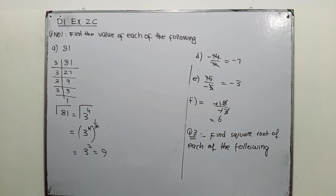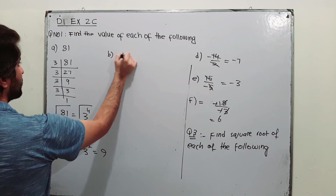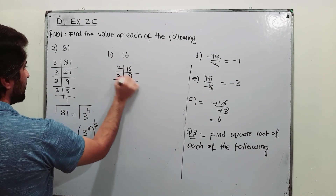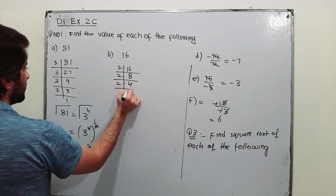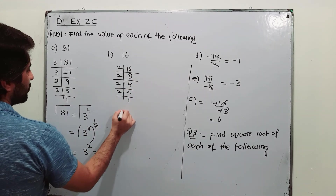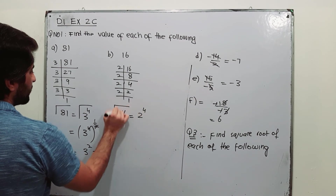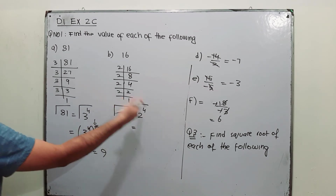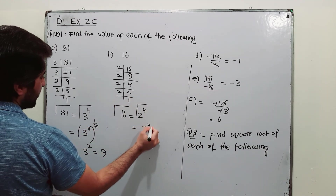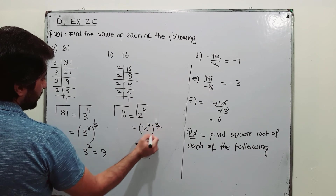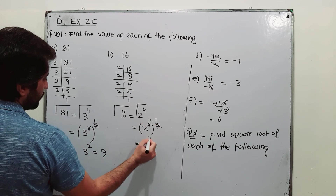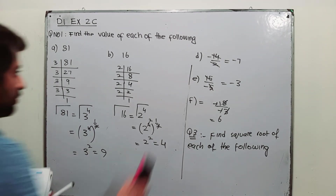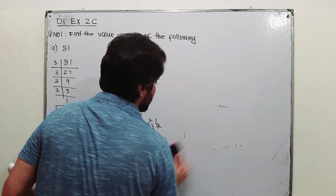Part b: find the square root of 16. Do prime factorization: 2 into 8, 2 into 4, 2 into 2, 2 into 1 — so 16 is 2 to the power 4. Take the square root of both sides; converting to exponential form gives the power 1 over 2, so 4 divided by 2 gives 2 squared, which is 4.